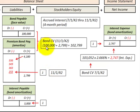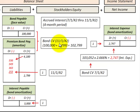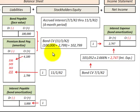The ending carrying value on 11-1-X2 is the bonds payable amount of $100,000 plus the remaining premium on bonds payable of $2,799, for a total carrying value of $102,799 at 11-1-X2. That's how we record accrued interest on bonds payable for this four-month reporting period.